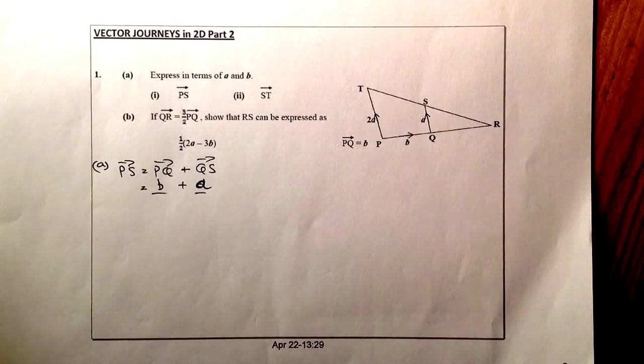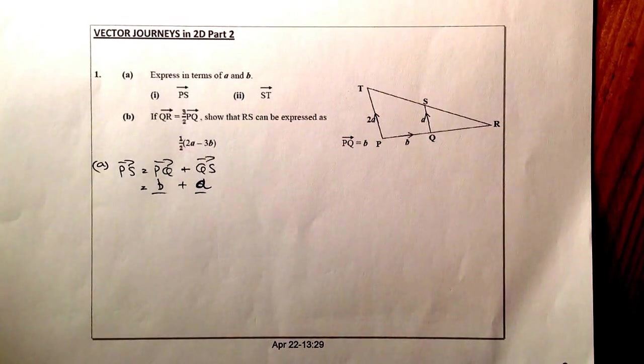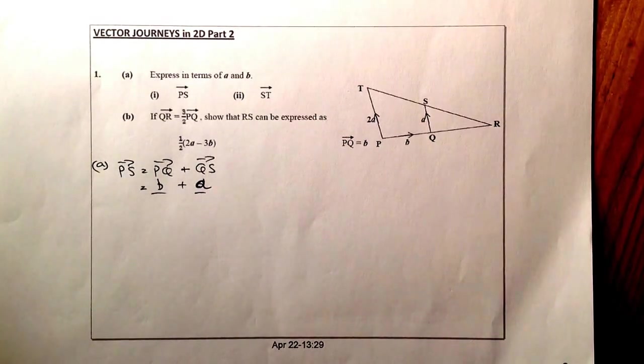This is the third of four vector diagram, vector journey video clips, and this is applicable to National 5 mainly, and also a bit with higher, although higher you'd be involved with some angles that would be in the questions here.